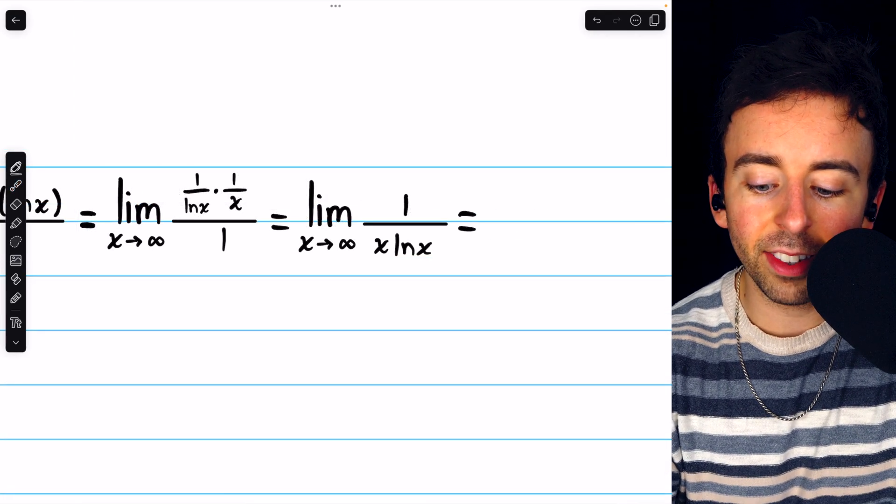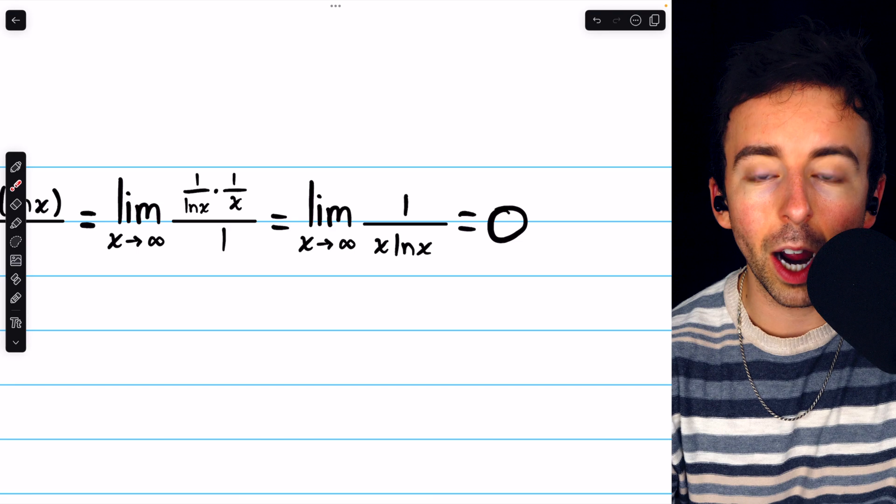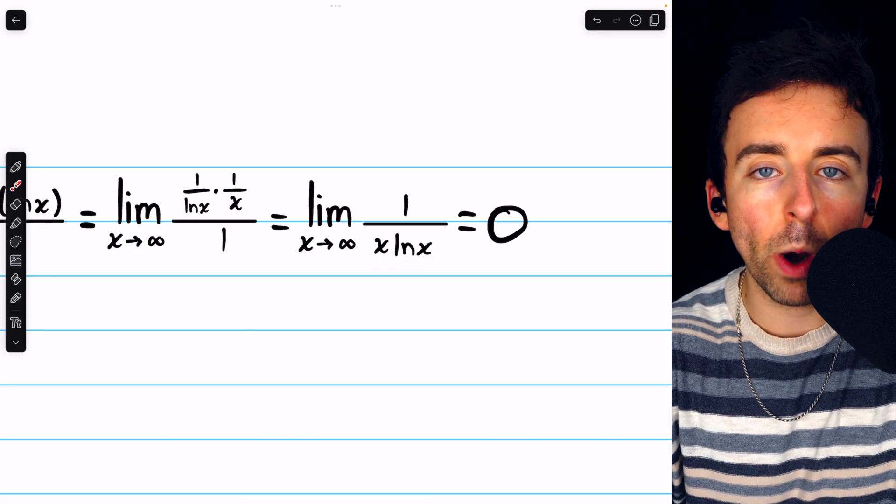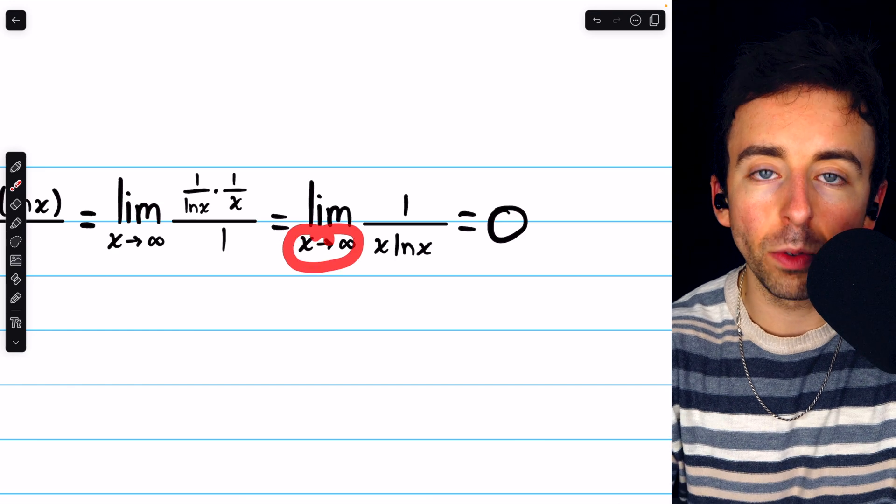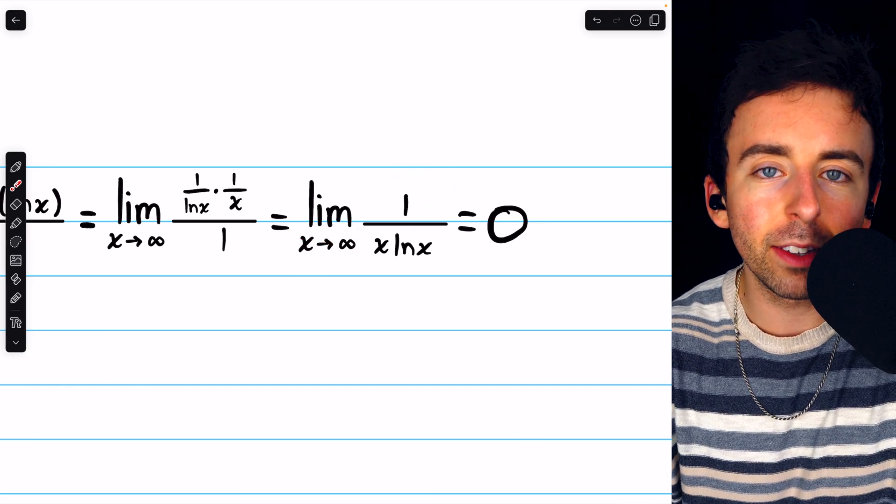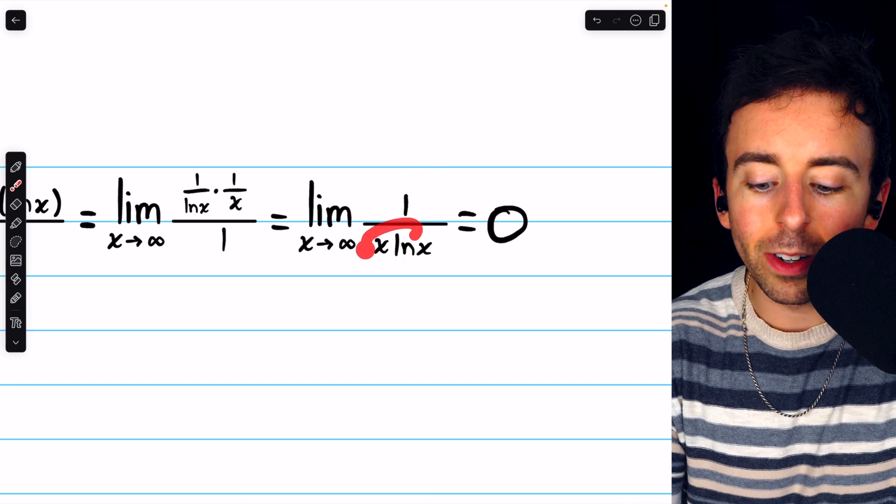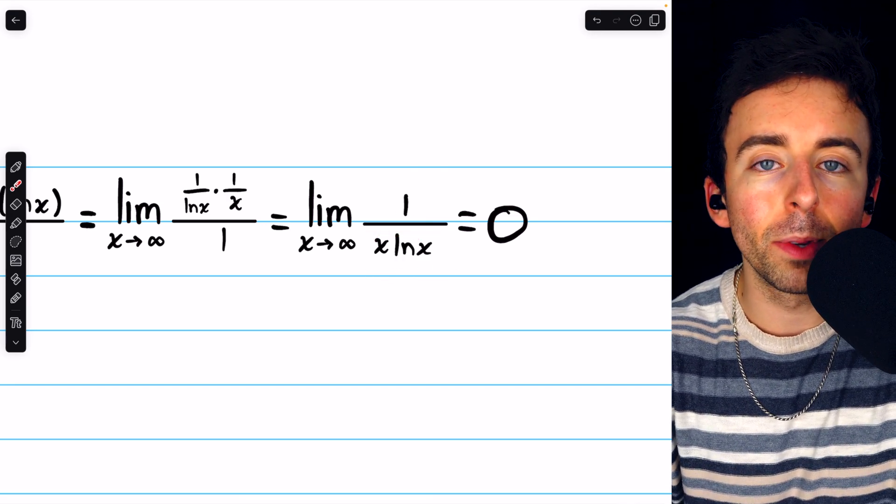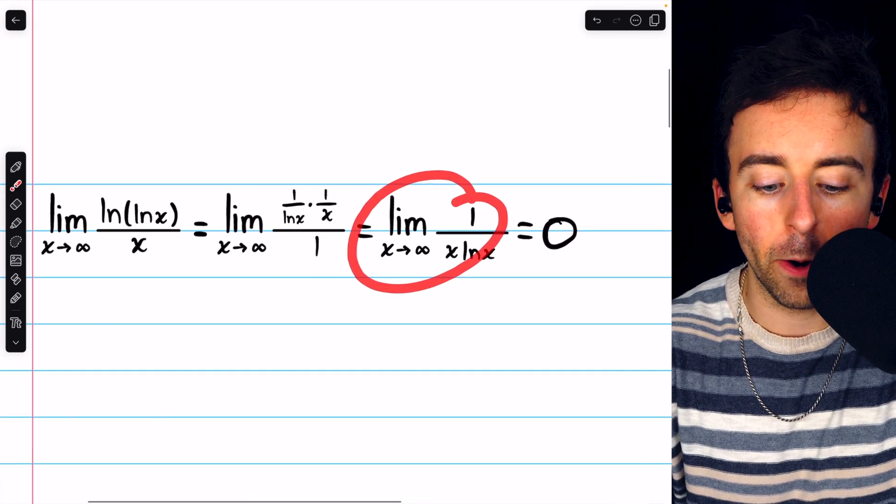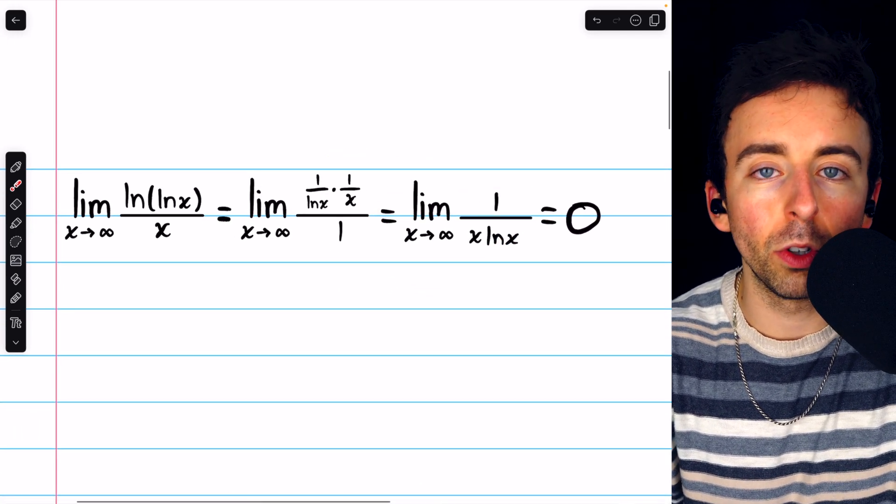it's easy to see that this converges to 0, because x and lnx both get arbitrarily large as x goes to infinity. Hence, our numerator is just some fixed finite number, while our denominator is getting arbitrarily large. So, certainly, this limit, and so our original limit, are equal to 0.